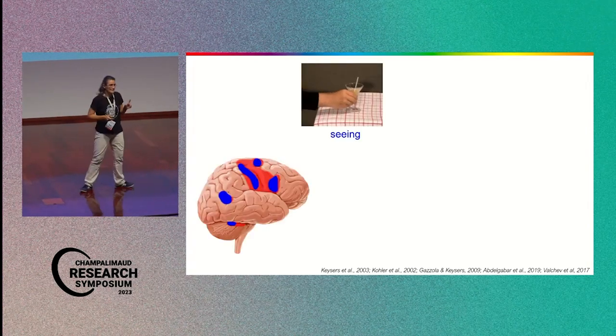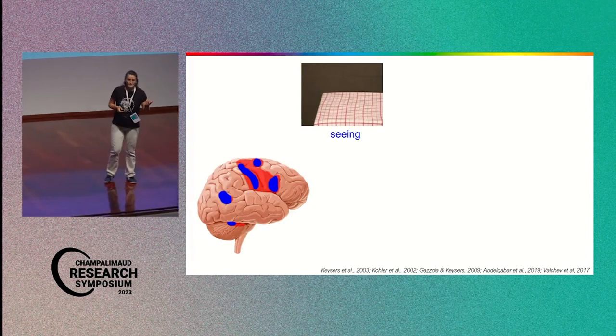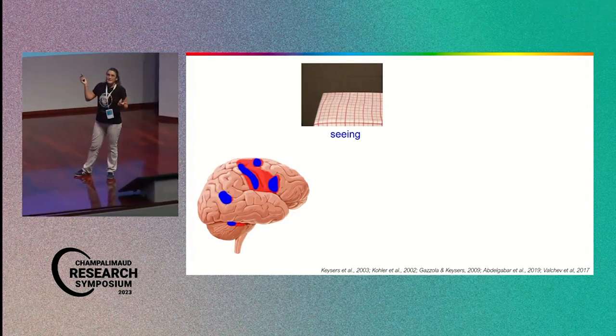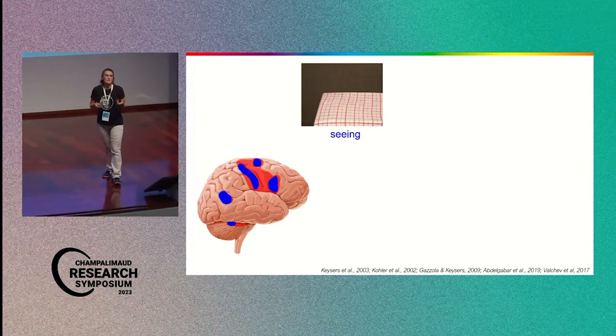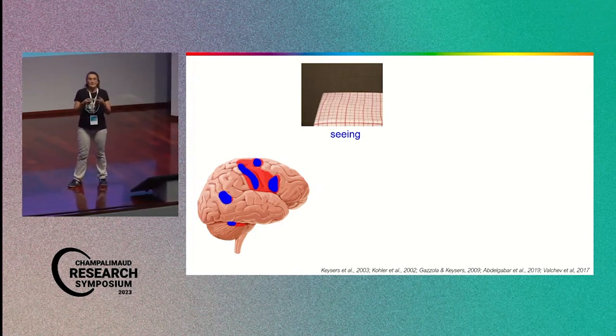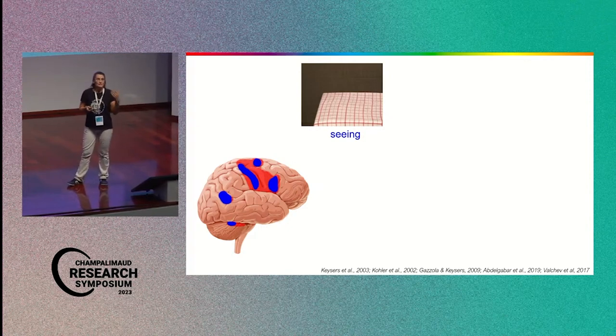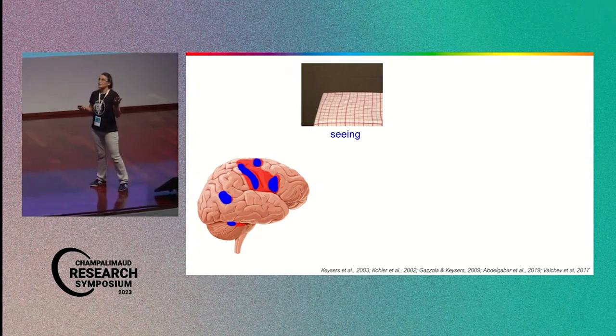At the very beginning, we were working a bit in boxes. So we were dissecting the scene into action, sensations and emotions. And of course, we all know that this is not reality. Everything comes together as well. But I want to show you just a couple of examples because they're quite important for what comes next.